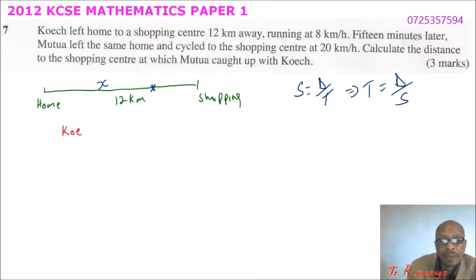for Koech, the time he took to the point where Mutua caught up with him, we can say the speed here, the distance is X divided by the speed, which is 8 kilometers per hour. That time that Koech took to move from here to here is equal to the time since Koech started 15 minutes after. It means 15 minutes after, that will be 15 over 60 to convert into hours.